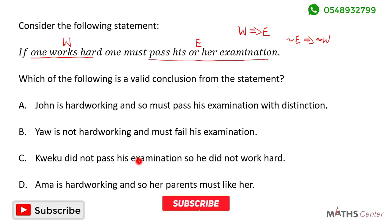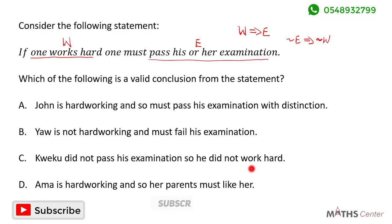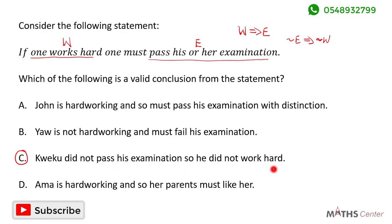Kweku did not pass his examination, so he did not work hard. This is the valid conclusion we can draw from the statement that was given to us. So the correct option is option C: Kweku did not pass his examination, so he did not work hard.